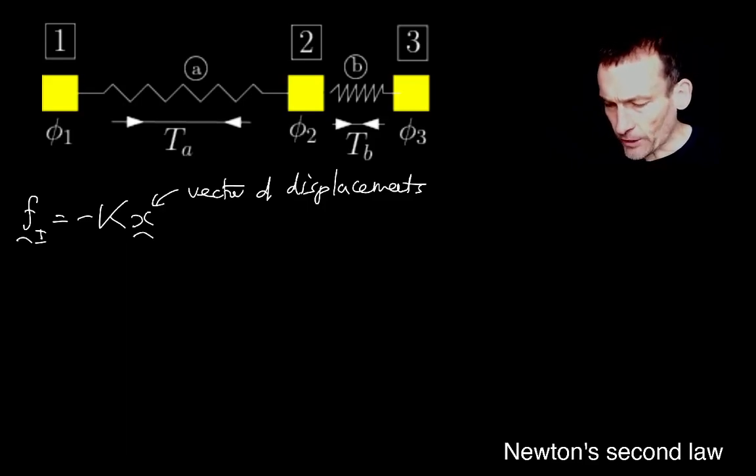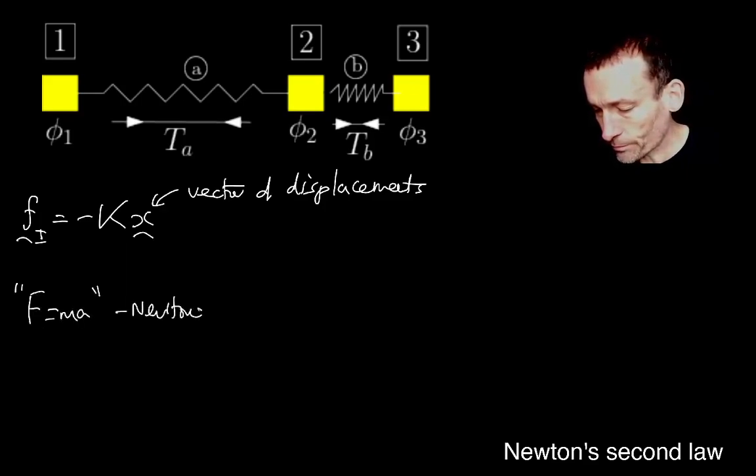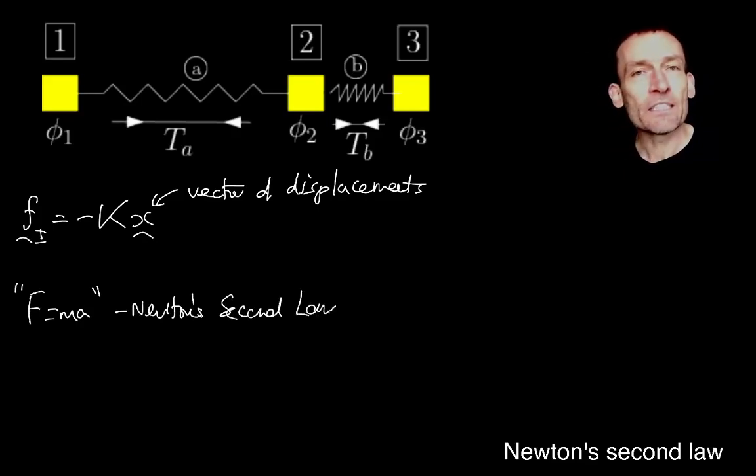And I don't know if you remember from your high school physics or some kind of physical science course, mechanics maybe, that you learnt this thing, F equals ma, which is Newton's second law. And it basically tells you what the acceleration a is on a mass m, if there's a net force of capital F on it.